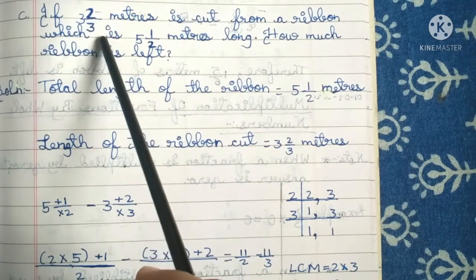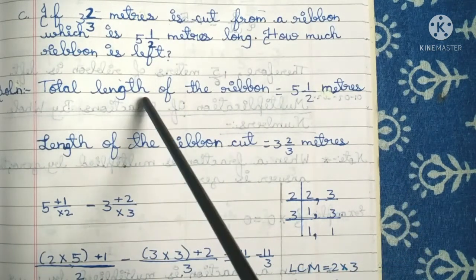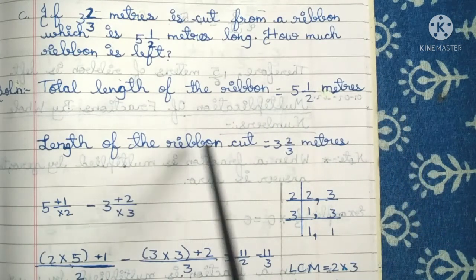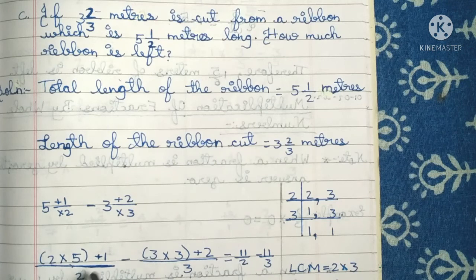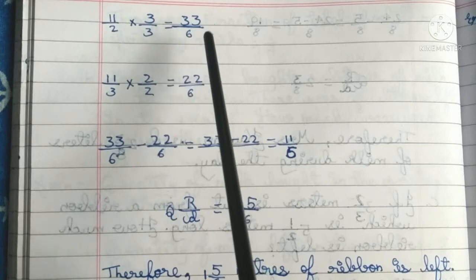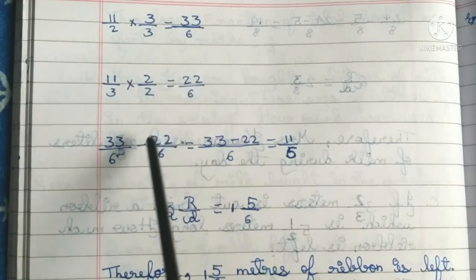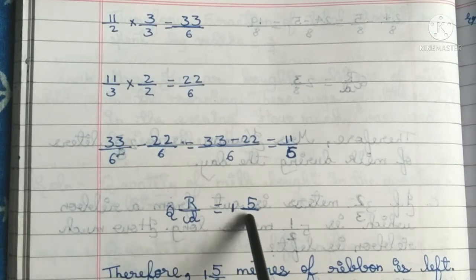Third one: If 3 2/3 metres is cut from a ribbon which is 5 1/2 metres long, how much ribbon is left? Solution: Total length of the ribbon is 5 1/2 metres. Length cut is 3 2/3 metres. Therefore, 5 1/2 minus 3 2/3. Converting: 11/2 minus 11/3. LCM of denominators 2 and 3 is 6. 11/2 multiplied by 3/3 is equal to 33/6. 11/3 multiplied by 2/2 is equal to 22/6. Therefore, 33/6 minus 22/6 is equal to 11/6. In mixed fraction, we get 1 and 5/6. Therefore, 1 5/6 metres of ribbon is left.